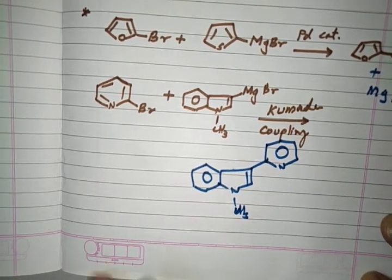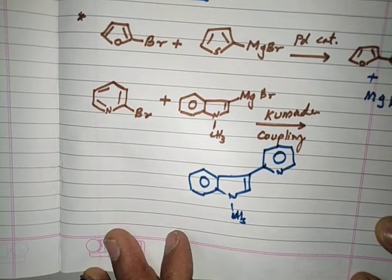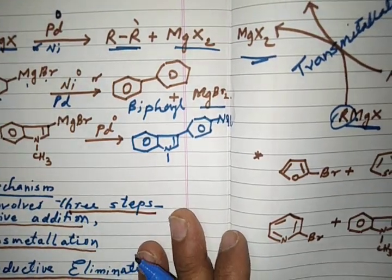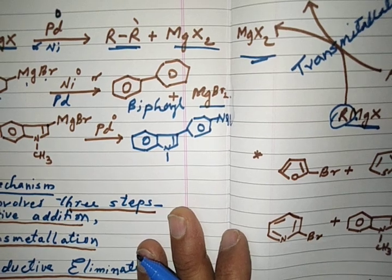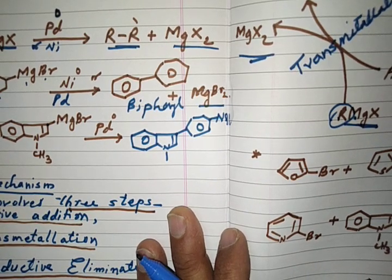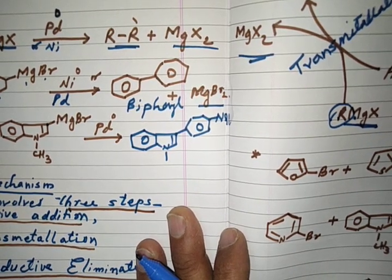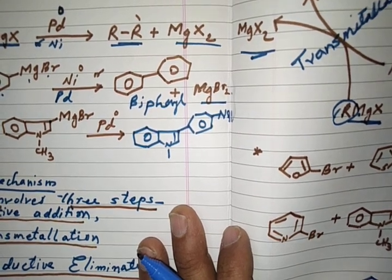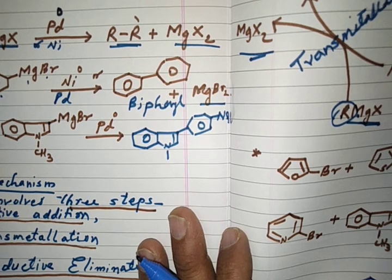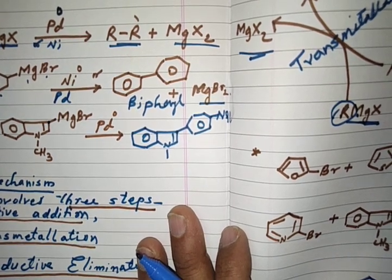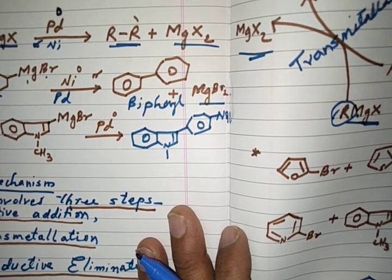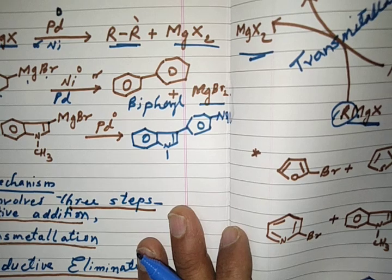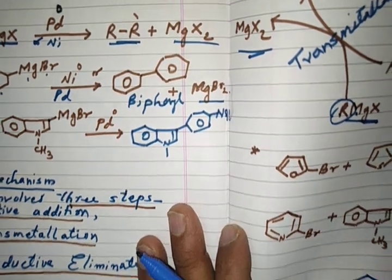That covers the overall idea of Kumada cross coupling, also called Kumada-Corriu cross coupling. The mechanism involves three steps: oxidative addition, transmetallation, and reductive elimination. The reaction uses nickel or palladium-based catalyst. This concludes the lecture on Kumada cross coupling reaction.